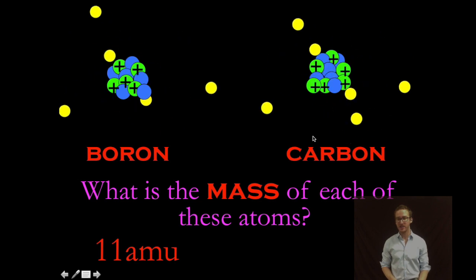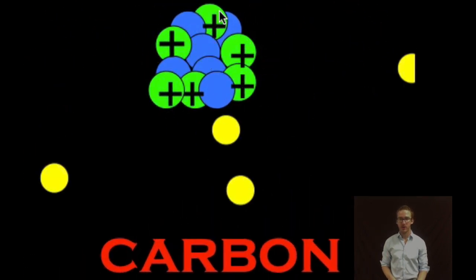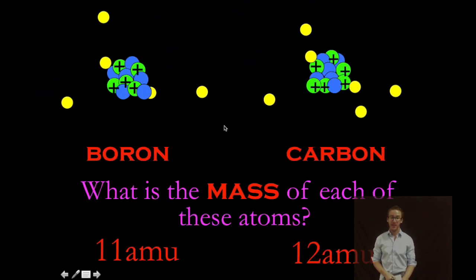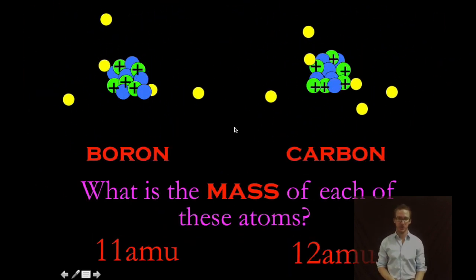The carbon atom in this example has a mass of 12. One, two, three, four, five, six protons. One, two, three, four, five, six neutrons. So again, the mass comes from the sum of your protons and your neutrons.